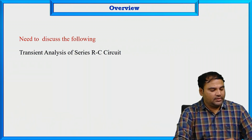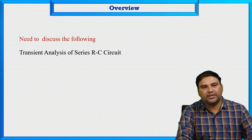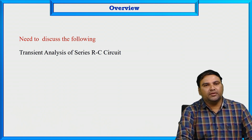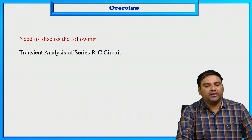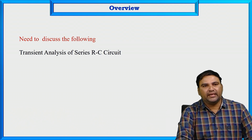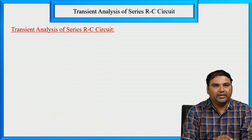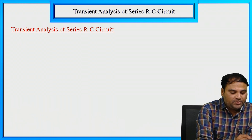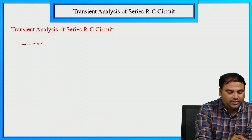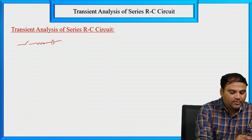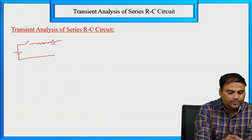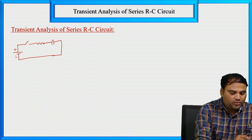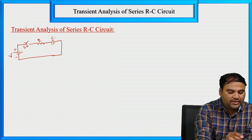We have to discuss the transient analysis of series RC circuit. In this series RC circuit, we have to calculate the current response of the RC circuit, and voltage drop across the resistor and voltage drop across the capacitor with differential equation. Here I am taking one series RC circuit — resistor R, capacitor C, voltage source V, and switch S.